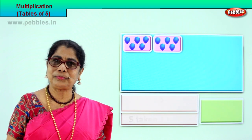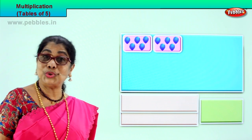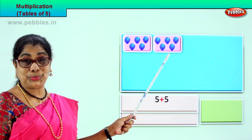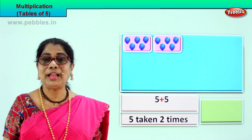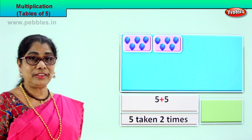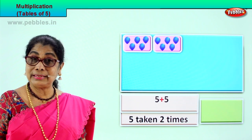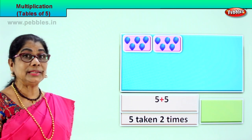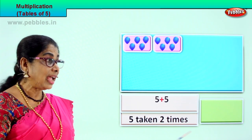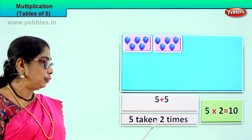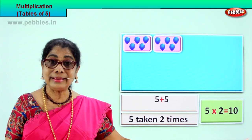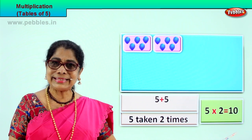Let's look at the next grouping of five. See what you have here — look carefully and enjoy. Here is five, here is five. How many groupings? Two. Five taken how many times? One, two — five taken two times. Five and five. Five plus five. Multiplication is repeated addition. Five plus five is ten. How do we write this? Five into two is equal to ten. Five twos are ten.